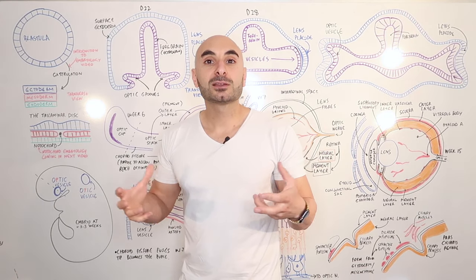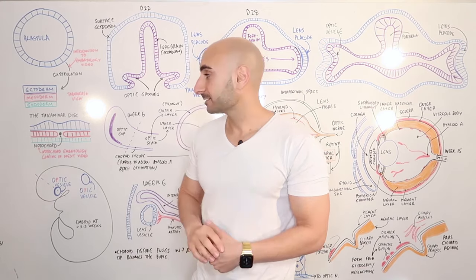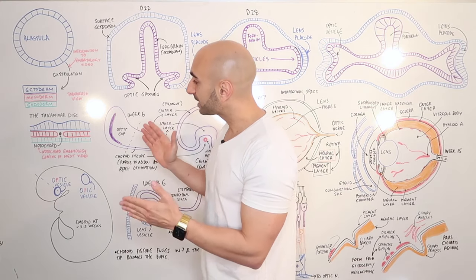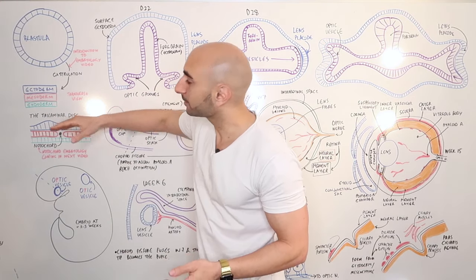In this pancake structure we have in blue the ectoderm, which will become skin, nervous tissue, and even the eyes. The mesoderm in red has three parts: paraxial mesoderm which are muscles or somites, intermediate mesoderm which forms gonads and kidneys, and the lateral plates. In green we have the endoderm, which contributes epithelium to the GIT.